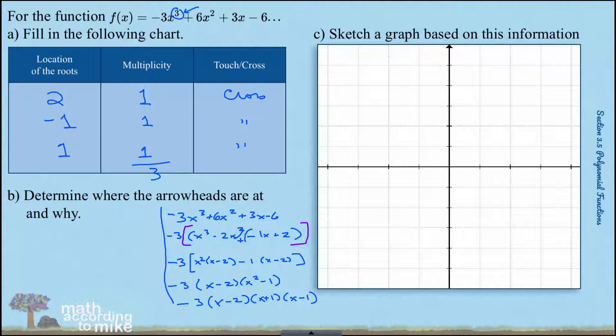Speaking of the degree, since the degree is odd, that means the arrowheads will point in opposite directions. And since the leading coefficient is negative, that means we would start in quadrant 2 and end up somewhere in quadrant 4. So the degree 3 says opposite directions, and the negative leading coefficient causes the graph to flip.